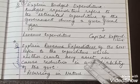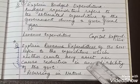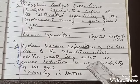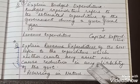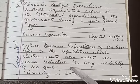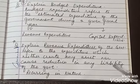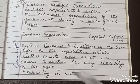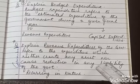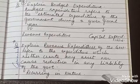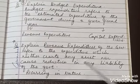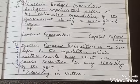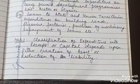The first category is revenue expenditure. It is the expenditure incurred by the government which does not create any assets. There are key features: one, it does not create an asset; two, it does not reduce any liability; three, it is recurring in nature — meaning it is an expenditure done throughout the year, not just once, it is repeated.